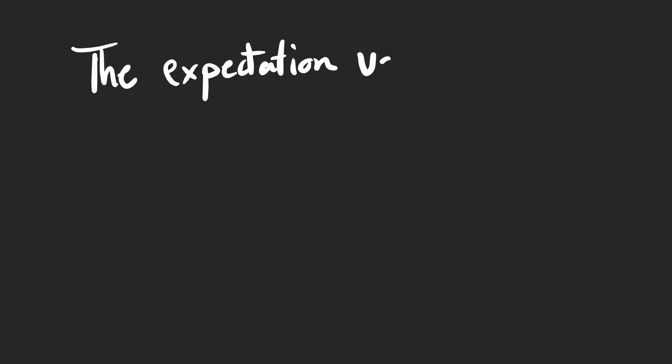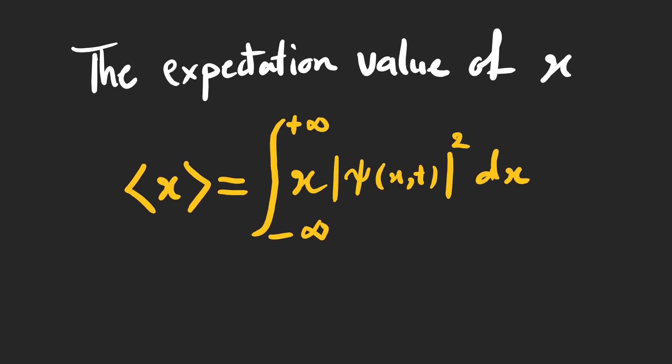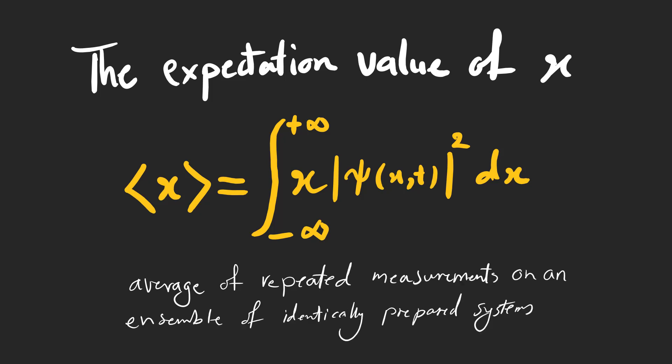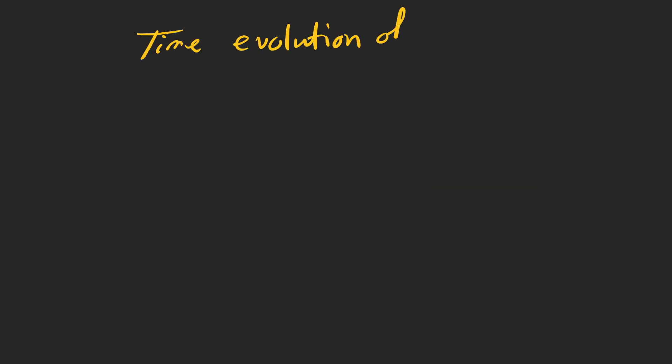What if we want to find the expectation value without actually measuring anything? The expectation value of x is given by this formula. It is the average of repeated measurements on an ensemble of identically prepared systems. Psi is dependent on time and we might want to know how the expectation value of x will change as time goes on.